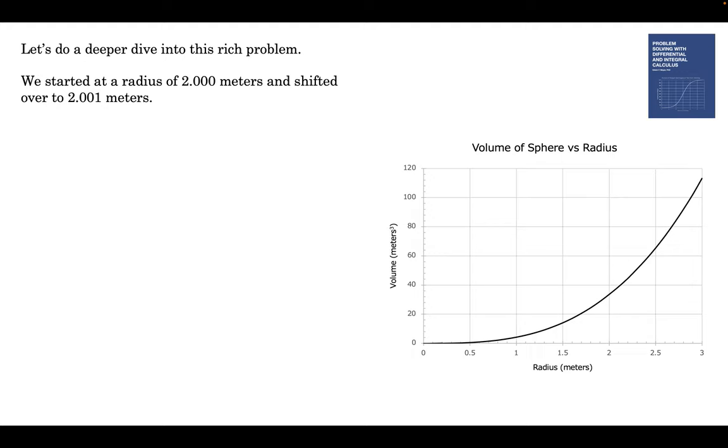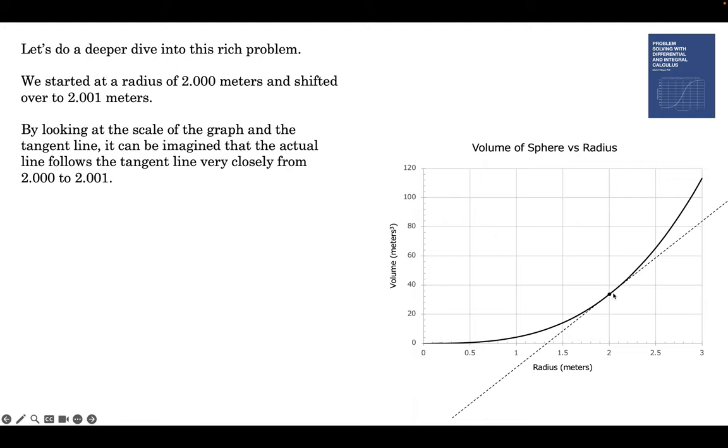We're done with it. You can stop if you want, but if you want to explore further, stay with me. So we started at a radius of 2, and we went over, horizontally, to 2.001. We tried to find the point on the curve. There's the tangent line. And you can see that these lines are pretty close together. From 2 to 2.001, it's almost the same line. Very close.